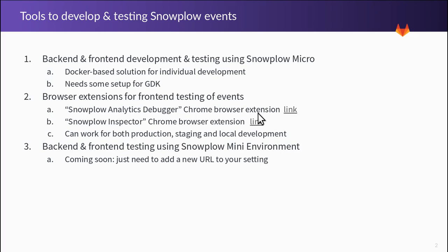Browser extensions allow you to see Snowplow front-end events and make sure you send the right events to the Snowplow collector. Also coming soon is a Snowplow Mini environment for GitLab, which is going to be a QA testing environment. You'll be able to point your URL in your local instance to that Snowplow Mini environment and test your local events using Snowplow Mini.